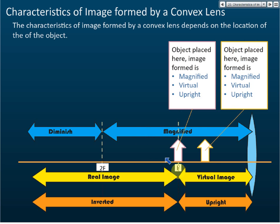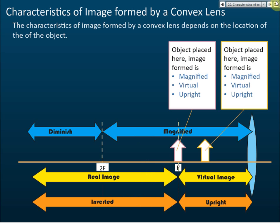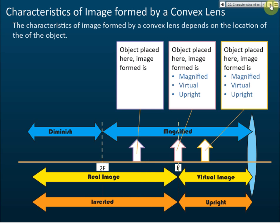If we put the object in between F and 2F, the characteristics of the image are: magnified, because this region is still magnified, and then it's real and inverted. So object placed here gives image that is magnified, real, and inverted.